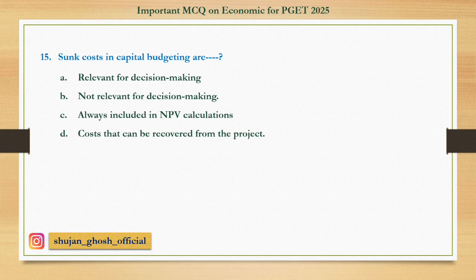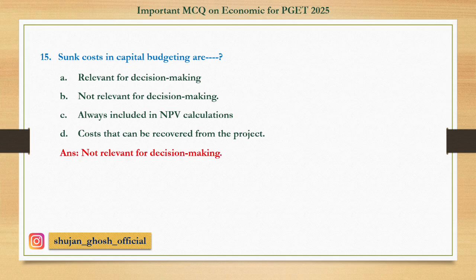Question number fifteen: Sunk costs in capital budgeting are — option A: relevant for decision making. B: not relevant for decision making. C: always... Sunk costs normally means costs that have already been incurred and cannot be recovered.